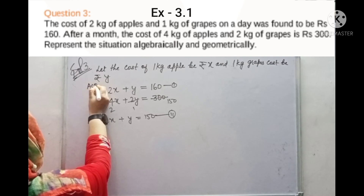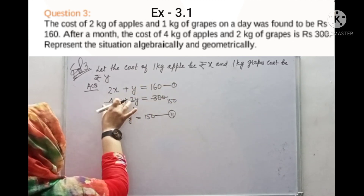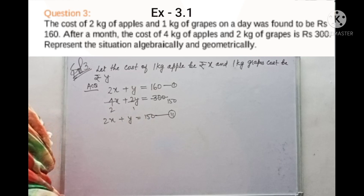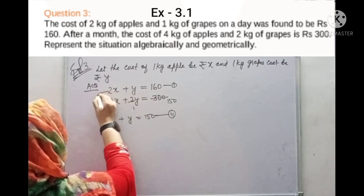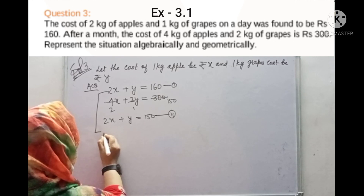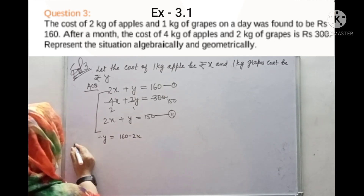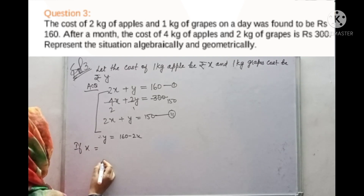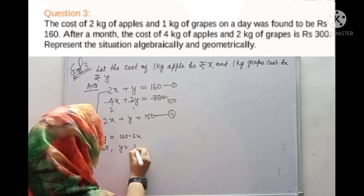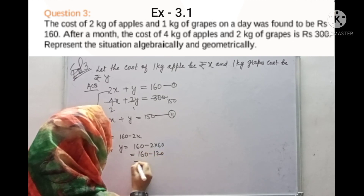According to the question: 2 kg apples and 1 kg grapes cost 160, and 4 kg apples and 2 kg grapes cost 300. Now, solving equation 1: 2x + y = 160, therefore y = 160 − 2x. If x = 60, then y = 160 − 120 = 40.